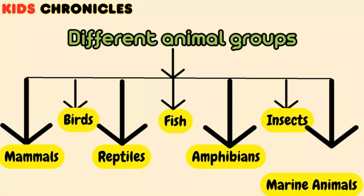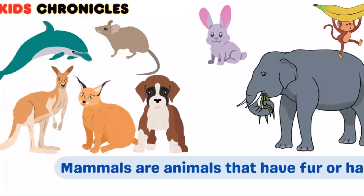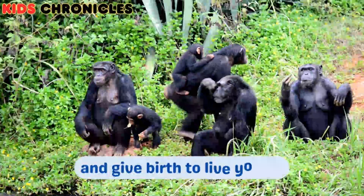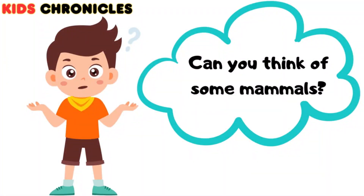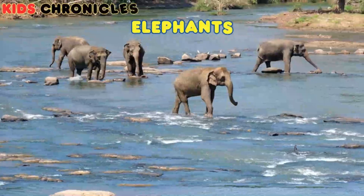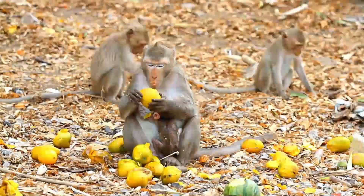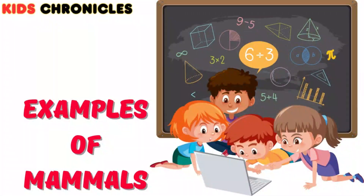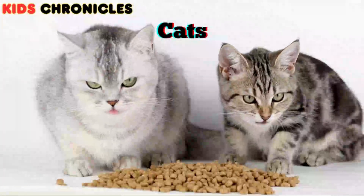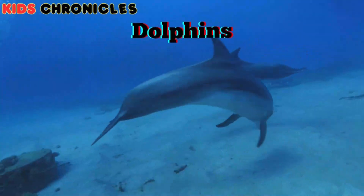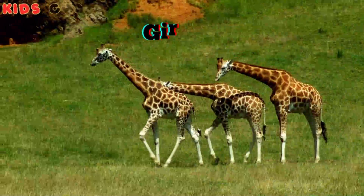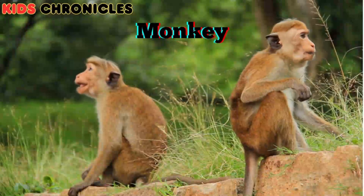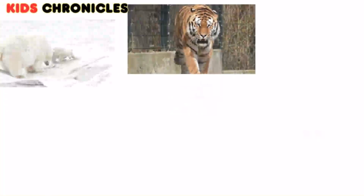Let's start with mammals. Mammals are animals that have fur or hair and give birth to live young. They nurse their babies with milk. Examples of mammals include cats, dogs, dolphins, lions, elephants, kangaroos, giraffes, and monkeys, and many more.